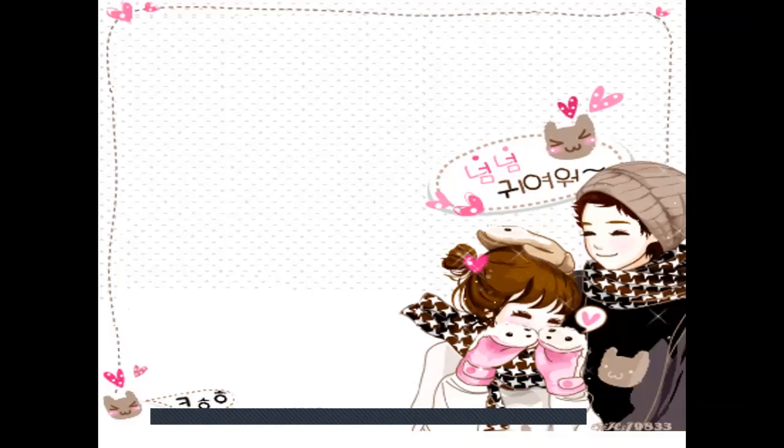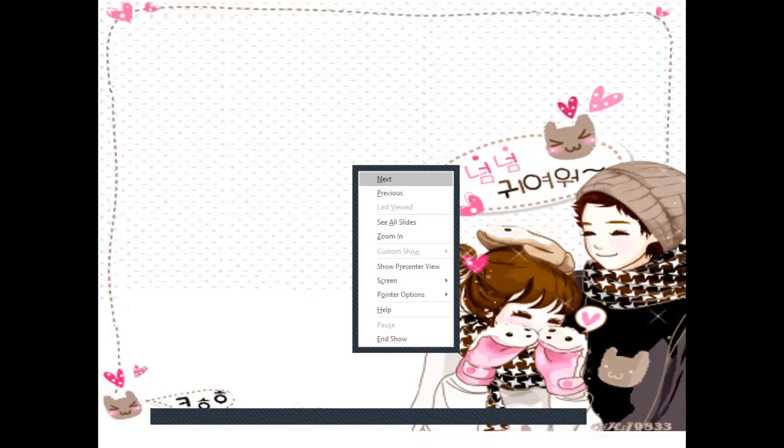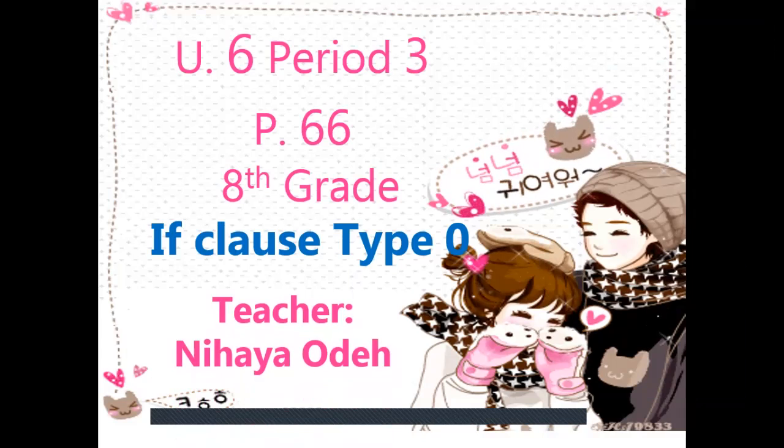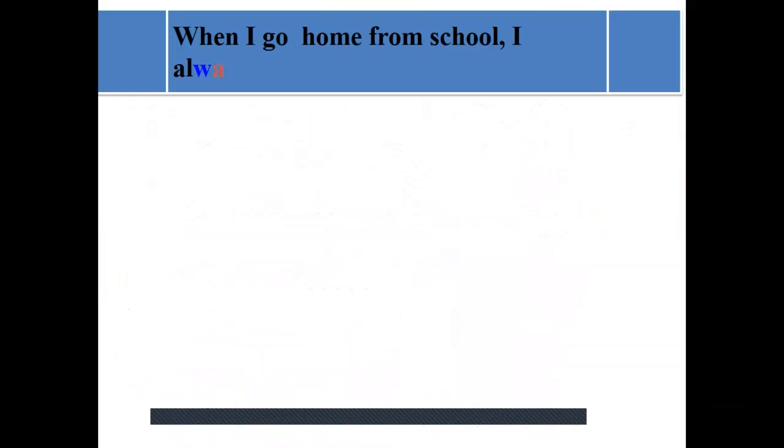Okay, Unit 6, Period 3. This is a lesson for the 8th grade. Let's start with Unit 6, Period 3, if clauses type 0. Okay, let's see some examples.